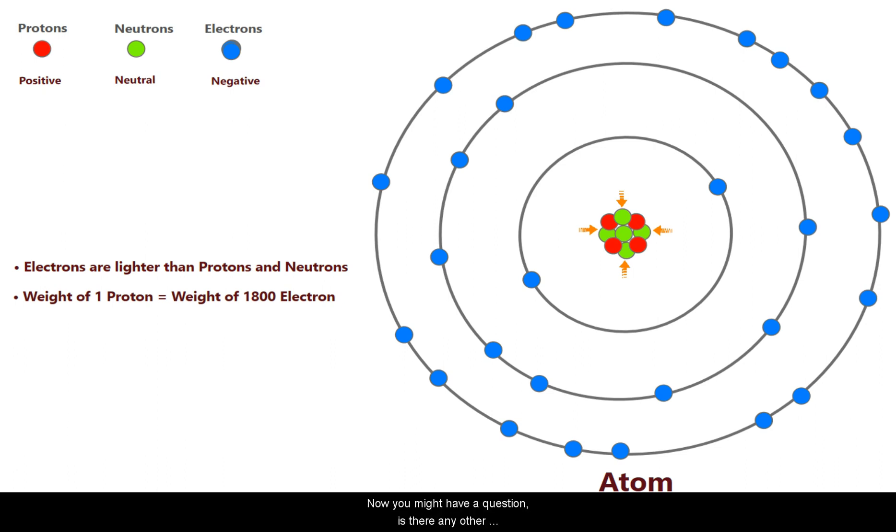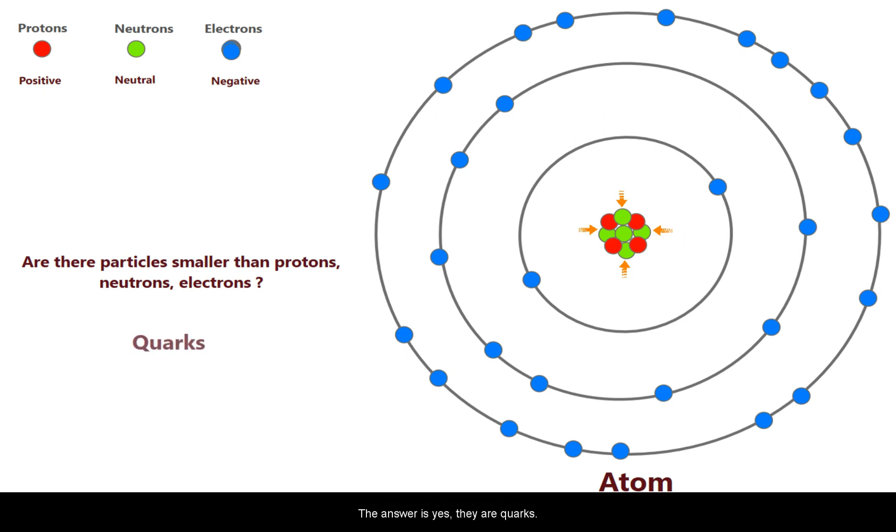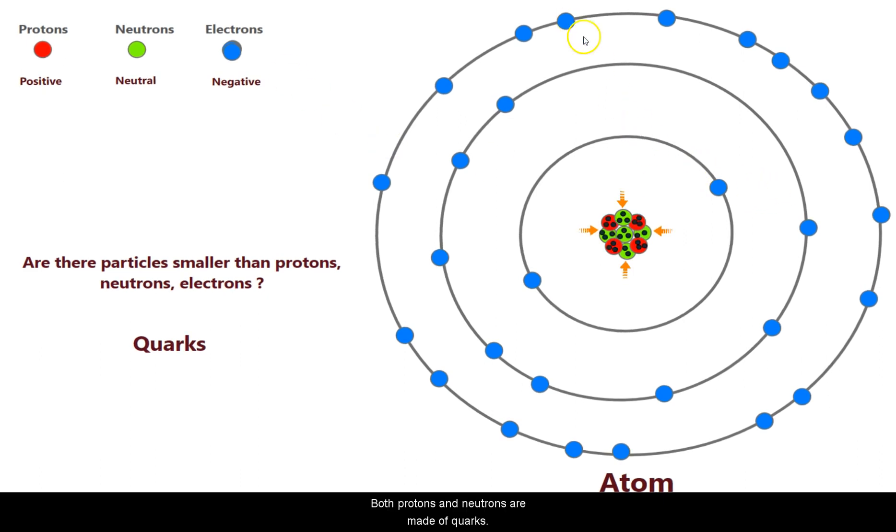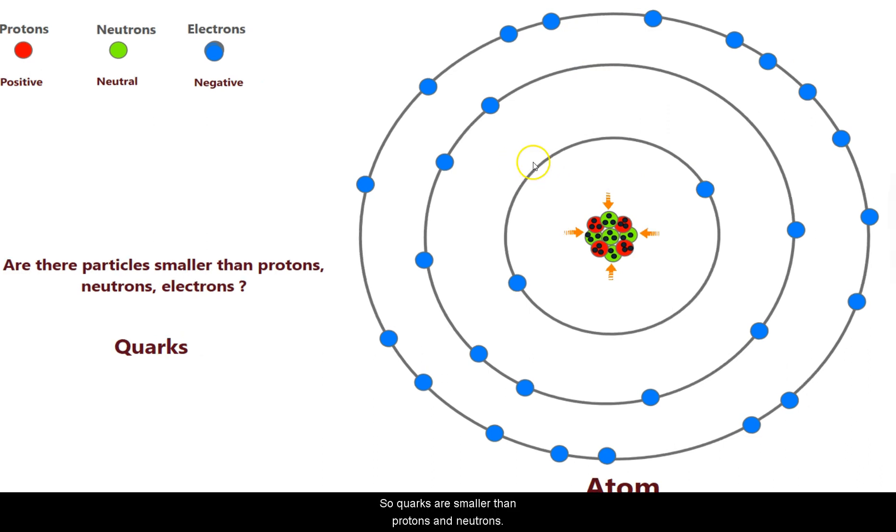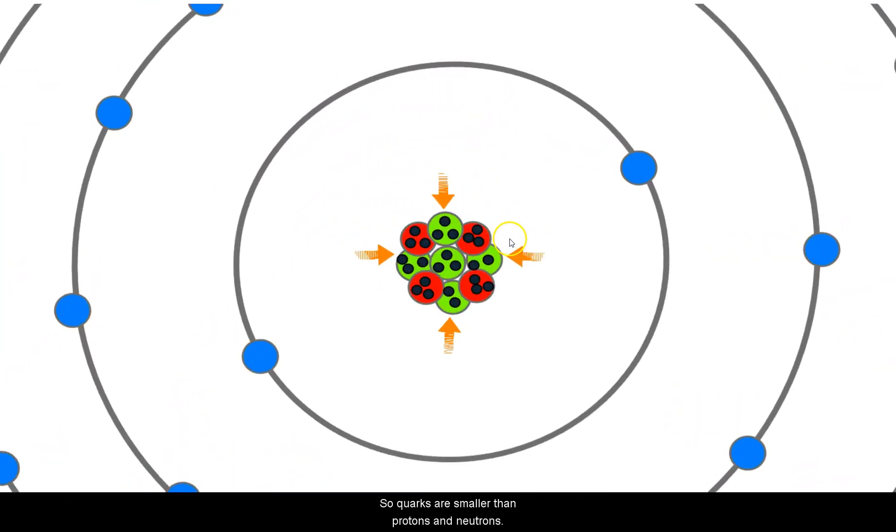Now you might have a question popped up in your mind whether there is any other particles which are smaller than protons, neutrons and electrons. The answer for this is yes. There are particles. They are called quarks. Both protons and neutrons are made out of quarks. And these quarks are smaller than protons and neutrons.